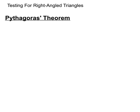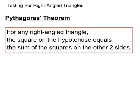So to test for a right angled triangle we use Pythagoras' theorem, so let's just remind ourselves of that theorem. For any right angled triangle, the square on the hypotenuse equals the sum of the squares on the other two sides.